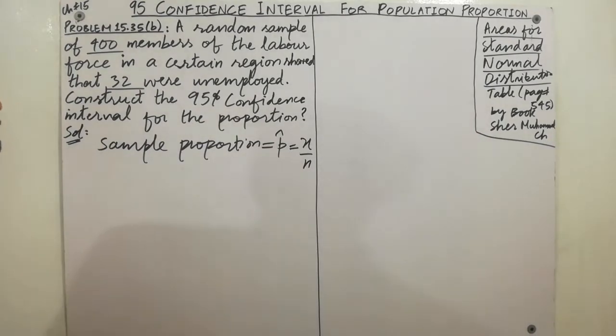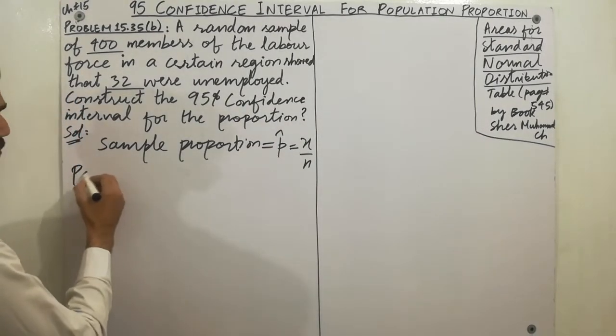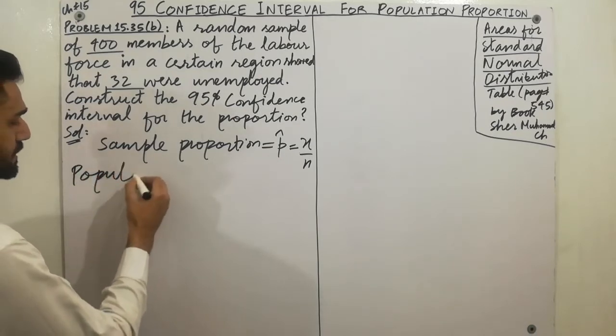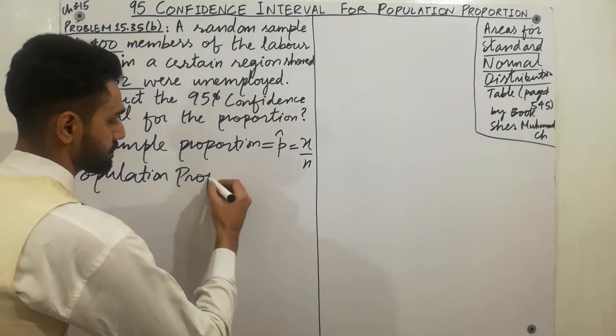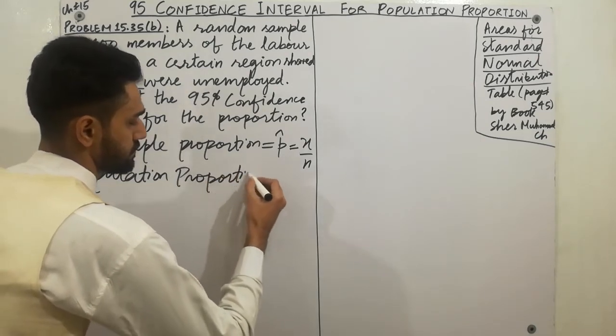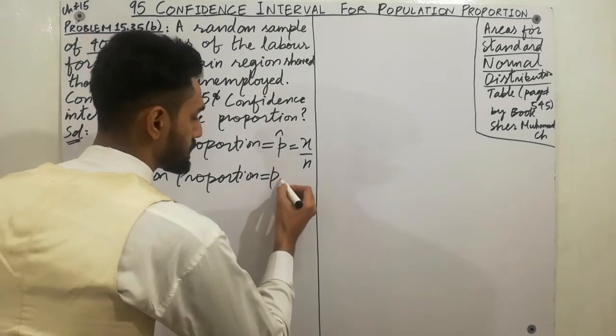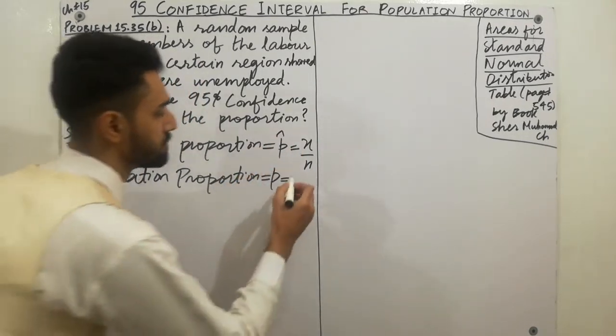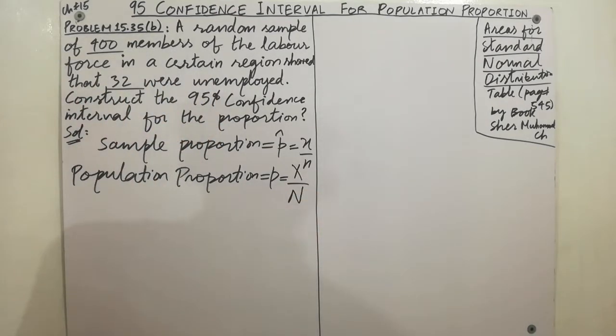And next is the population proportion. Population proportion is denoted by small p without cap. We can write here capital X over capital N. That's the difference between sample proportion and the population proportion.